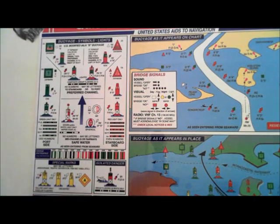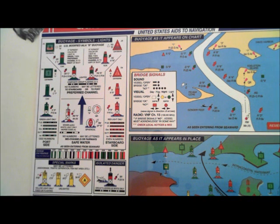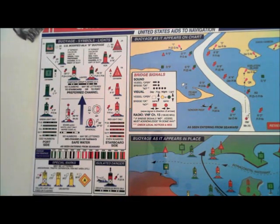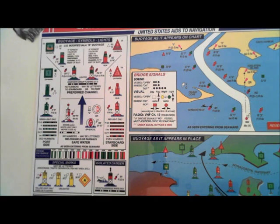Isolated Danger Buoys mark just that — isolated dangers. They are one of the only marks that do not mark safe water. Starboard and port hand marks, preferred channel buoys, and safe water marks are all marking safe water — saying stay between these and you're safe. The isolated danger mark is black and red, flashes Group 2 white only, and marks an isolated danger — meaning don't go by that buoy.